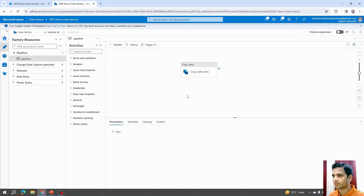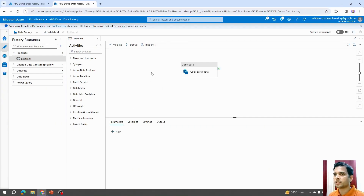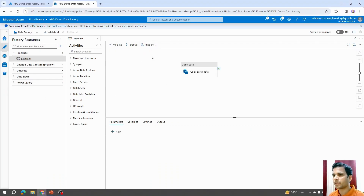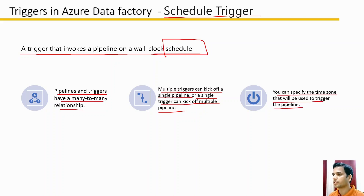Pipelines and triggers have a many-to-many relationship. This means a trigger I created can be attached to multiple pipelines, and similarly multiple triggers can kick off a single pipeline. So one pipeline can have multiple triggers associated, or a single trigger can kick off multiple pipelines. One feature specific to schedule-based triggers is that you can specify a time zone to be used when triggering the pipeline.